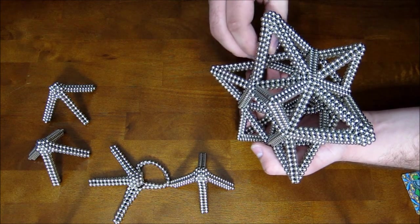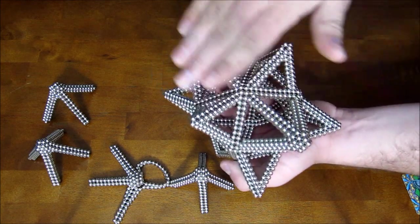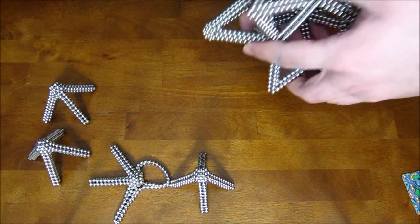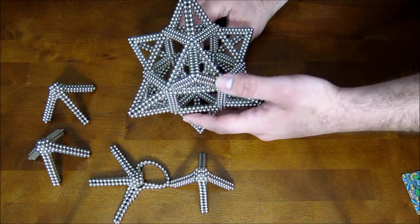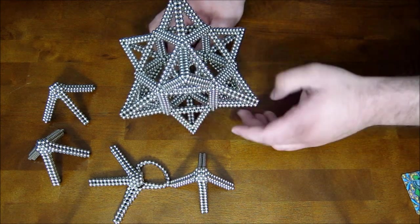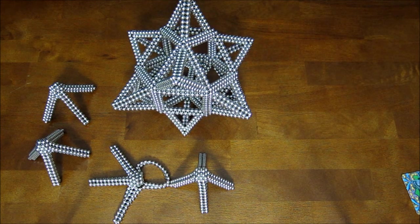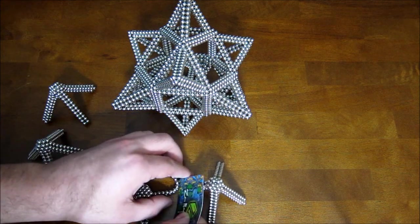And once you've attached two of them, you can actually flip it over onto that because that forms a nice flat surface. Just like that. And anyways, I'm going to fix this and then go on to attach all the rest of the square points.